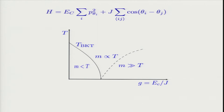The first thing to do is just look at this phase-only model. m is the mass generated here. m less than T is the Kosterlitz-Thouless line; in this critical regime m is proportional to T; and here m is much bigger than T, which is the gapped insulating phase. I just want to ask: what is the conductivity in the insulating phase? It should be zero — so let's just verify that.